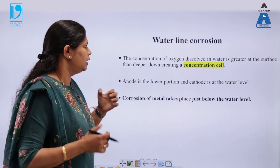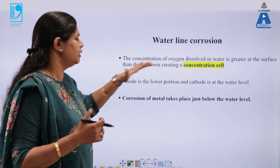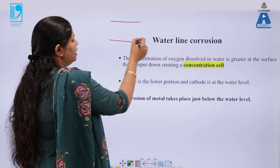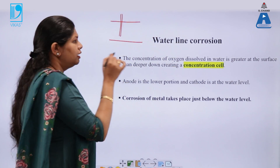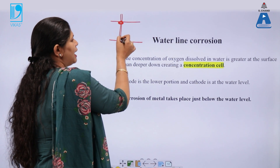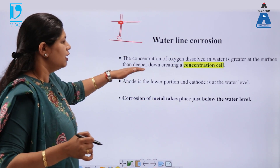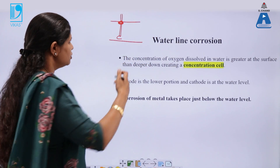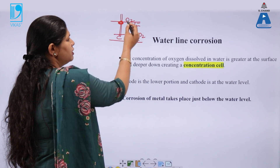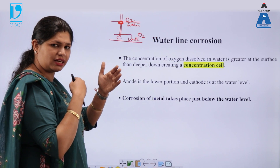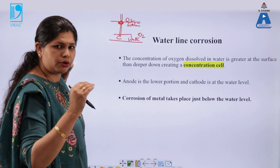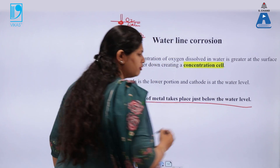The third type is waterline corrosion. In this, the concentration of oxygen dissolved in water is greater near the surface than deeper down, creating a concentration cell. You must have observed that if an iron pipeline is dipped in water, more corrosion takes place at the upper level compared to the bottom level. This is because of the difference in oxygen concentration — the oxygen concentration near the water surface is more than at the bottom — making the electrochemical reaction more feasible at the top. Corrosion of metal takes place just below the water level.